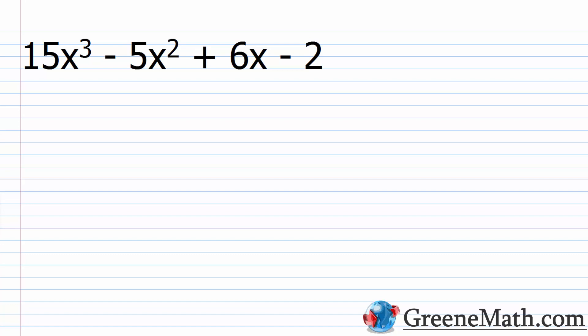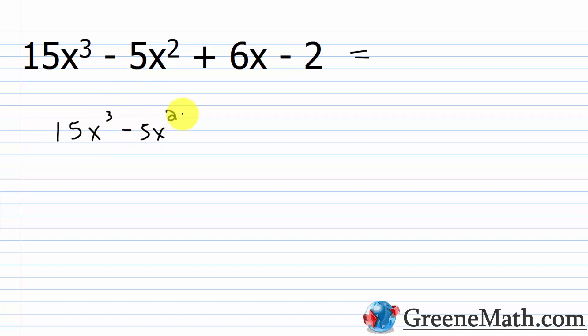Let's start with an easy example — one where we don't need to go through different combinations. I can take the first two terms as a group and the last two as a group without reordering anything. So I have 15x³ - 5x² + 6x - 2. Taking the first two as a group: (15x³ - 5x²), and plus the second group: (6x - 2).